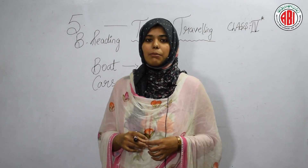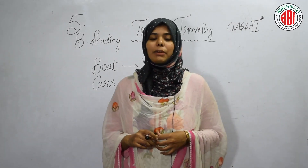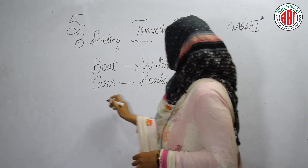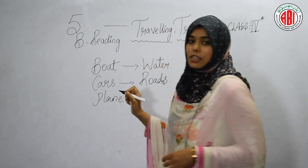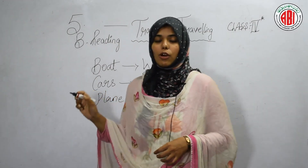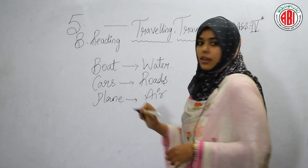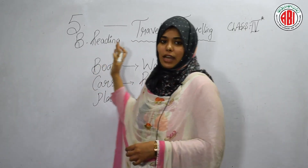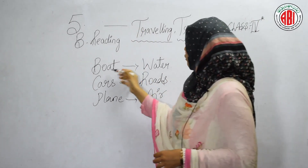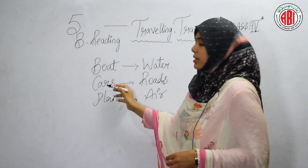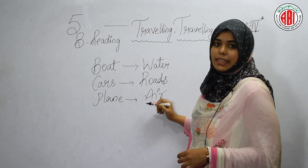Let us see what the third stanza is about. Fly, fly, fly your plane high up in the air. The third means of transportation is the plane. Where does the plane fly? The plane always flies in the air — high up in the air. Traveling, traveling through the sky, the plane will get you there. So boats flow on water, cars drive on roads, and planes fly in the air.